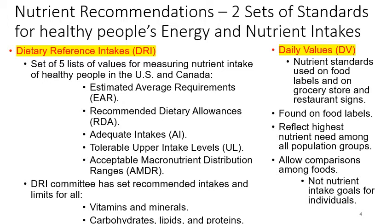For the dietary reference intakes, there are five sets of values for measuring nutrient intake of healthy people in the United States and Canada: 1. Estimated average requirements. 2. Recommended dietary allowances. 3. Adequate intake. 4. Tolerable upper intake levels. 5. Acceptable macronutrient distribution ranges. The dietary reference intake committee has set recommended intakes and limits for vitamins, minerals, carbohydrates, lipids, and protein.